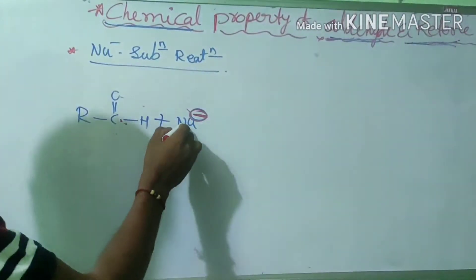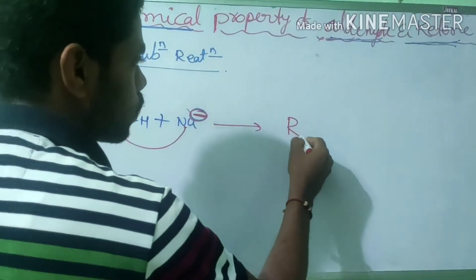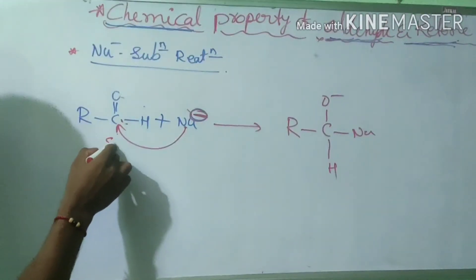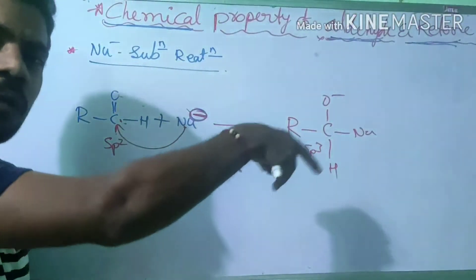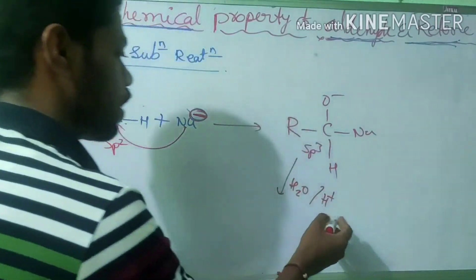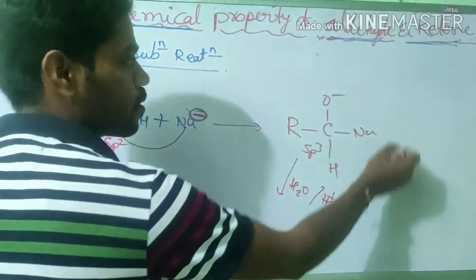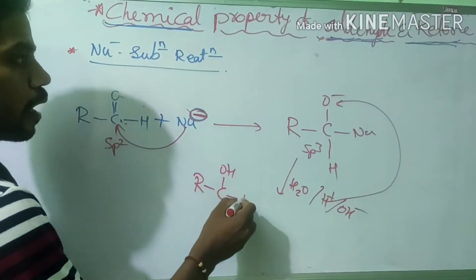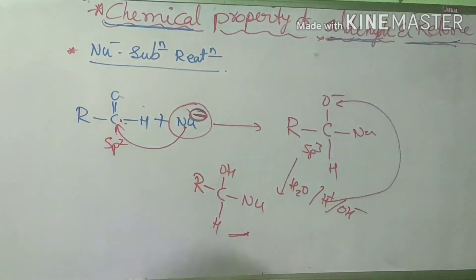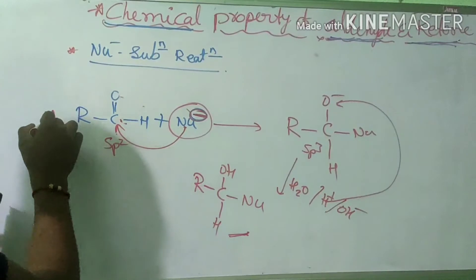When the nucleophile attacks this carbon, the product formed is R-C-O minus, with the nucleophile and a hydrogen atom attached. Before attack it is sp2 hybridized and afterwards it becomes sp3 hybridized - tetrahedral shape. After hydrolysis with water, which contains H and OH, the H attaches to the oxygen to give R-C-OH plus the nucleophile group.